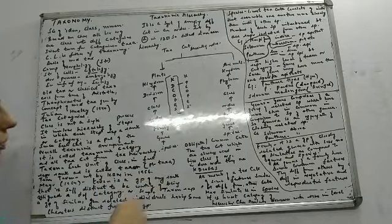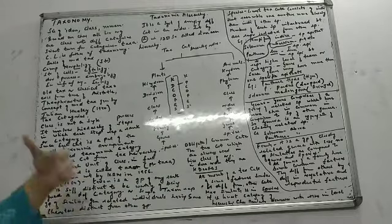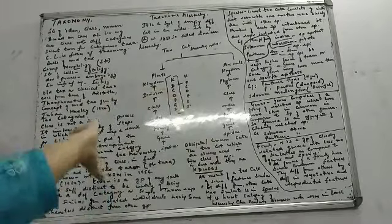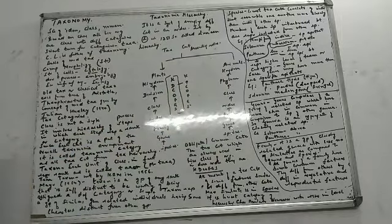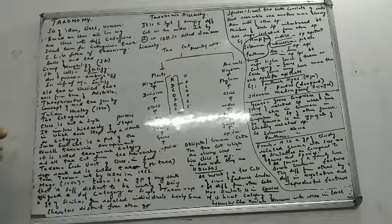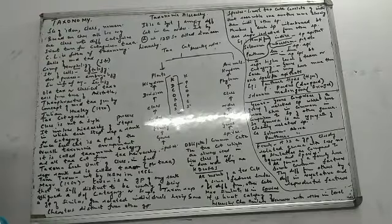The next higher category above genus is family — a group of closely related genera with more similarities. Remember, similarities keep decreasing as we go higher in the level. Maximum similarity is between species members; a little less at genus level; a little less still at family level. The lower the level, the more the similarity; the higher you go, the similarity keeps on decreasing. Thank you.